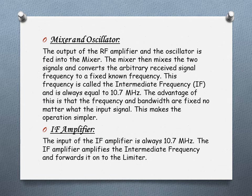The third component is the mixer and the oscillator. The output of the RF amplifier and the oscillator is fed into the mixer. The mixer mixes the two signals and converts the arbitrary received signal frequency to a fixed known frequency. This frequency is called the intermediate frequency and is always equal to 10.7 MHz. The advantage is that the frequency and bandwidth are fixed no matter what the input signal is, which makes the operation simpler.